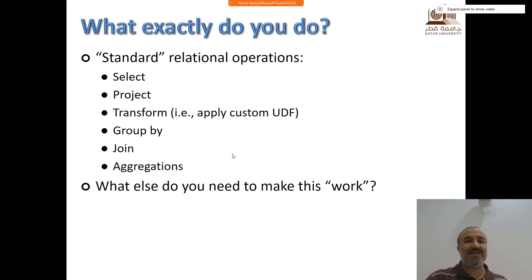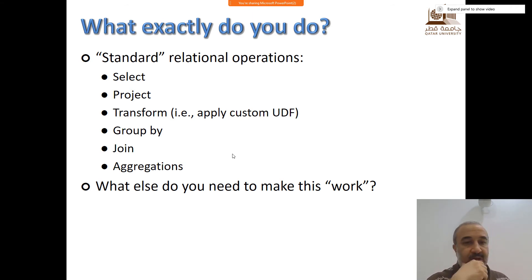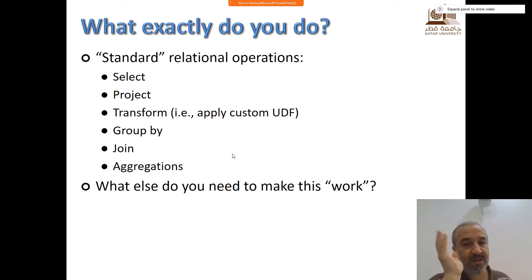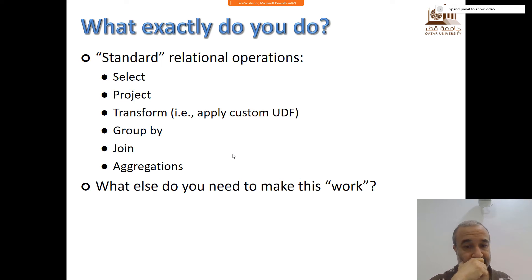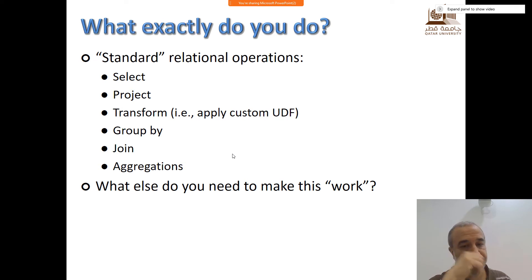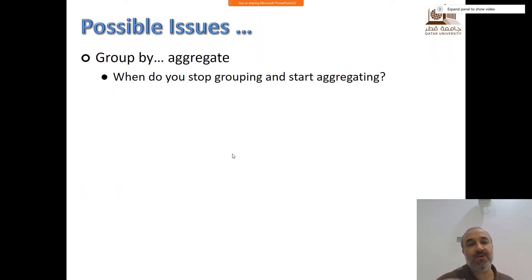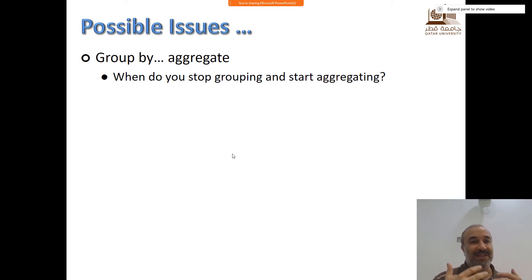What do we do with streams? There are standard relational operations like what we do in databases — select, project, group-by, join, any aggregations. Transform means you can apply a customized user-defined function — you can do anything you want. These are typical relational operations, but you can also do complex operations. If you think about issues with these operations, let's consider some potential problems.